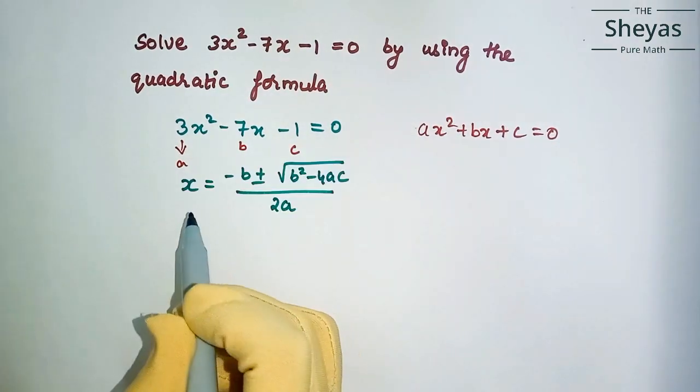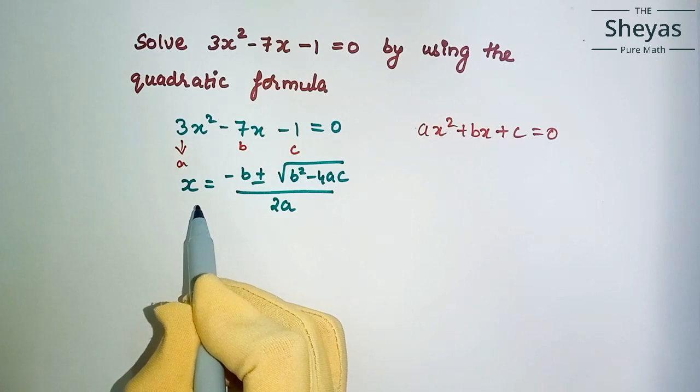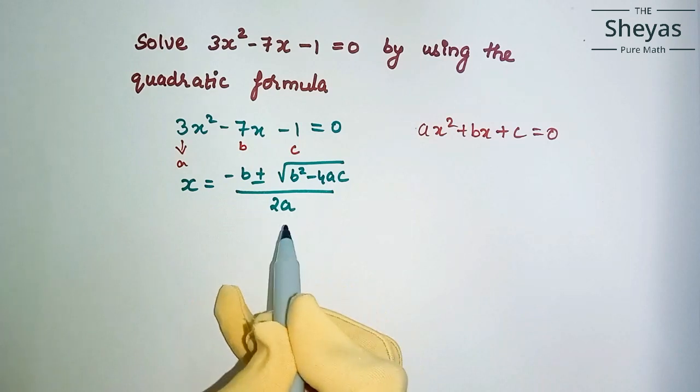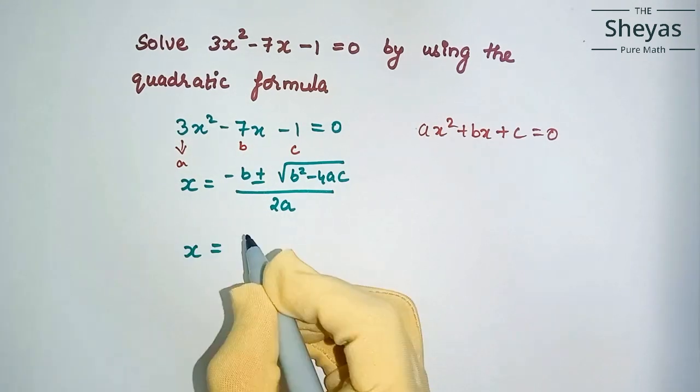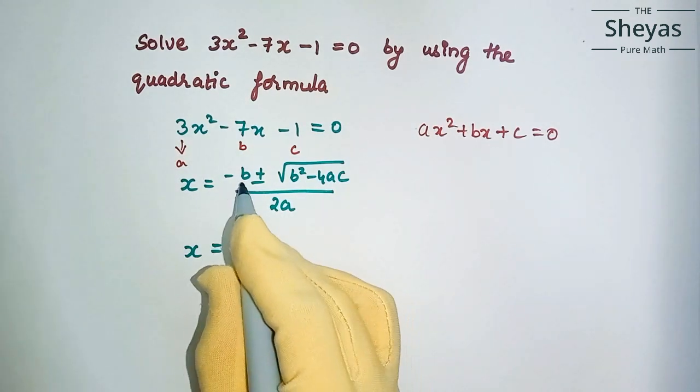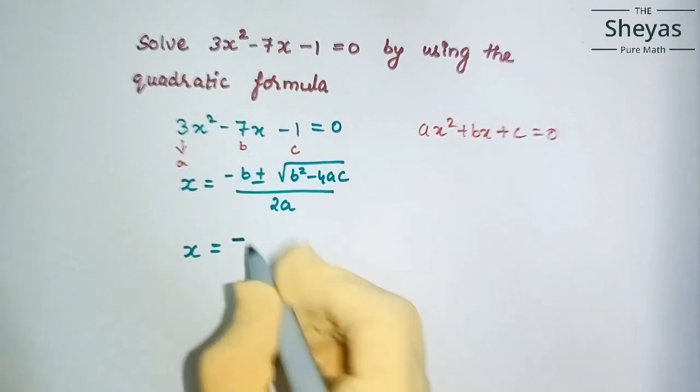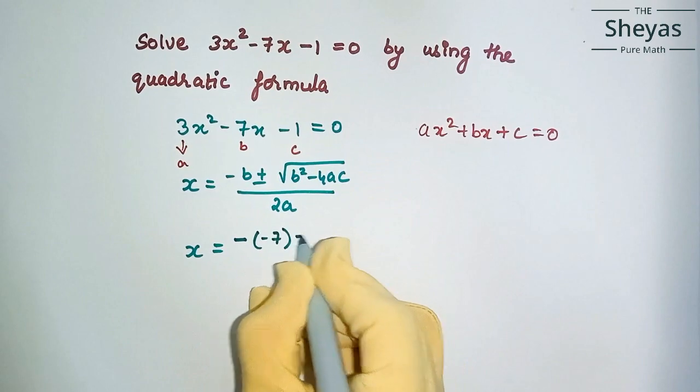We know that the quadratic formula is x equals minus b plus or minus root of b squared minus 4ac by 2a. What is b here? You can write it as such, and b is minus 7, so minus 7 plus or minus.